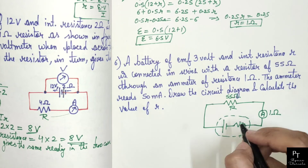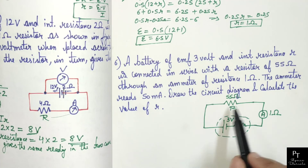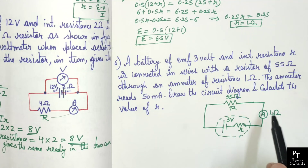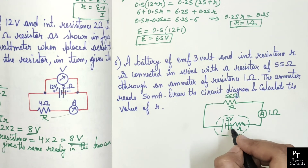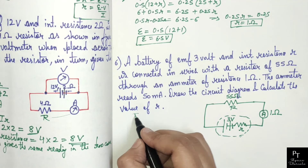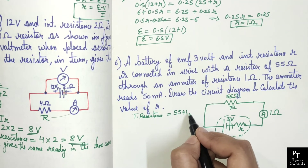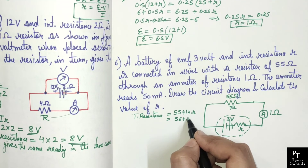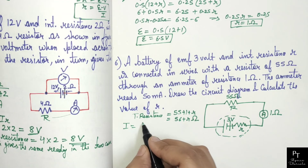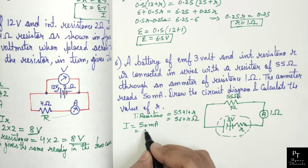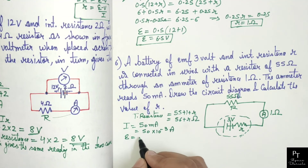The total resistance in this circuit is 55 ohm plus 1 ohm of the ammeter plus r of the battery, giving total resistance equal to 56 plus r ohms. We also have the current equals to 50 mA, which is 50 × 10⁻³ amperes. The EMF of the battery is 3 volts, and we have to find the value of r.